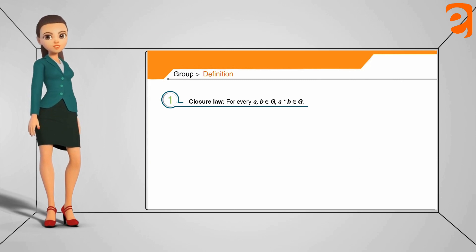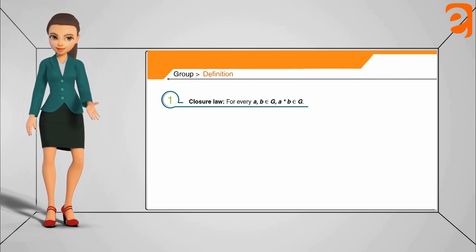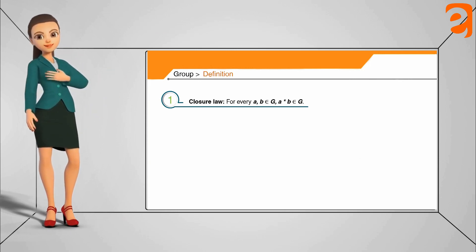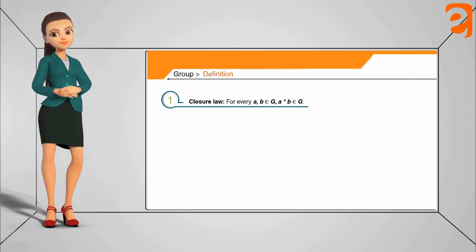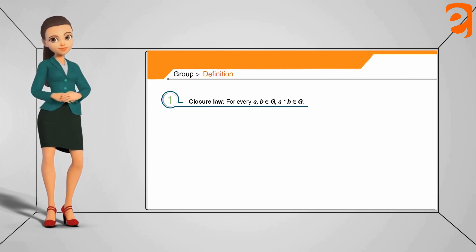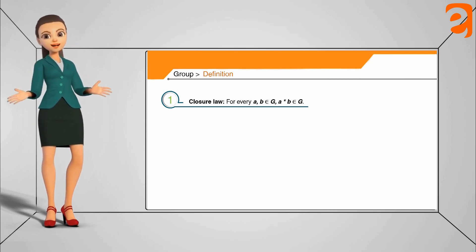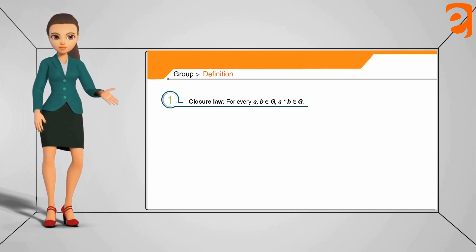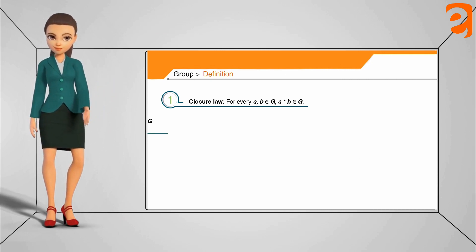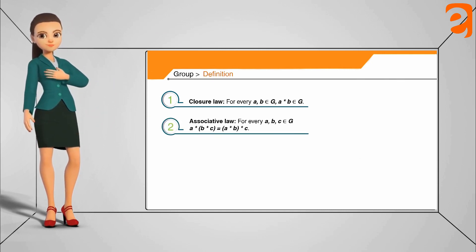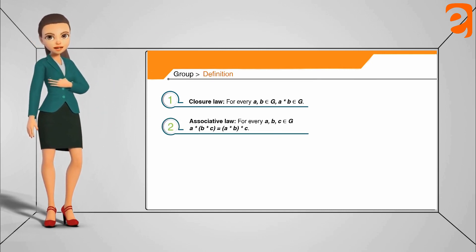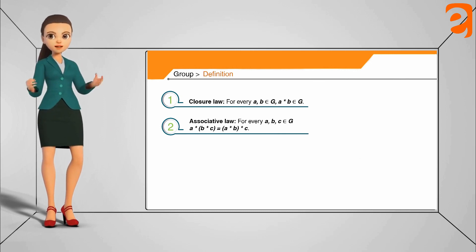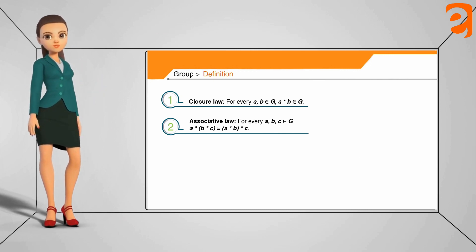The first property is the closure property, which says that for any two elements of the group G, applying the binary operation — a star b — the resultant should also be an element of the set G. The second property is the associative law: for any three elements a, b, c of the set G, a star (b star c) should equal (a star b) star c.